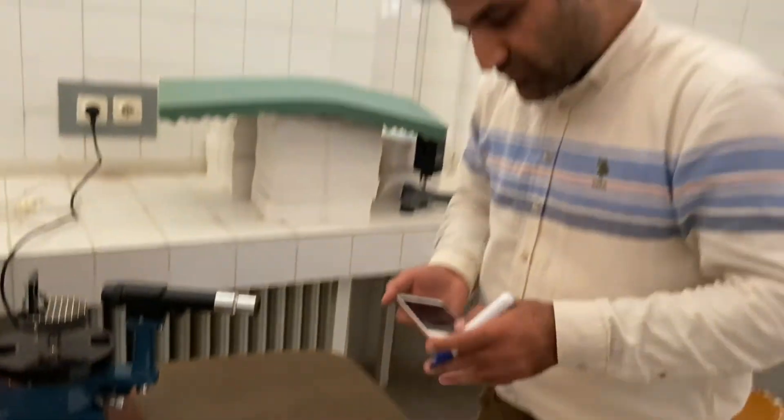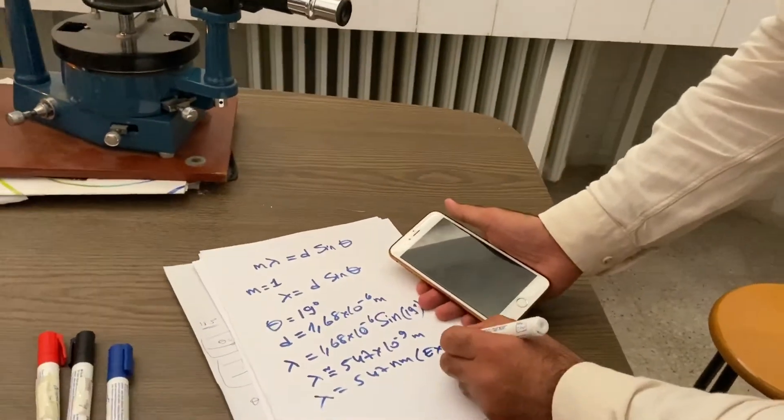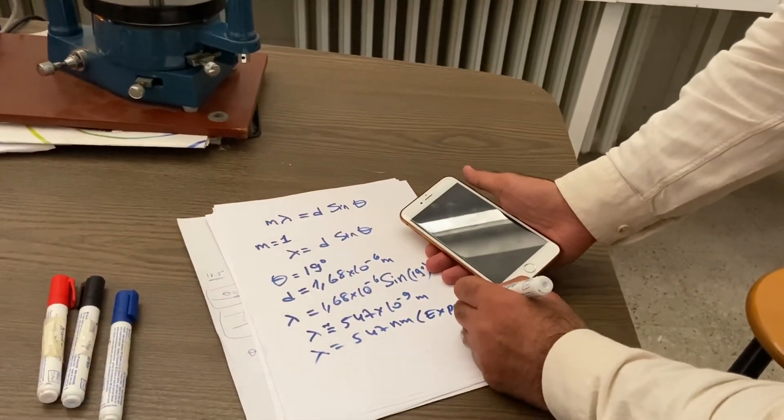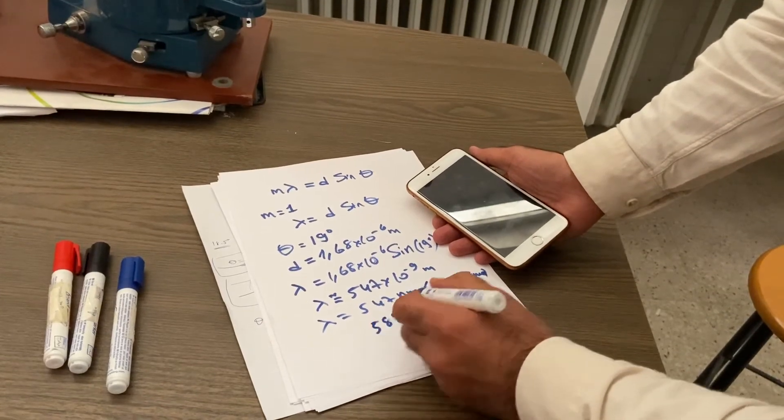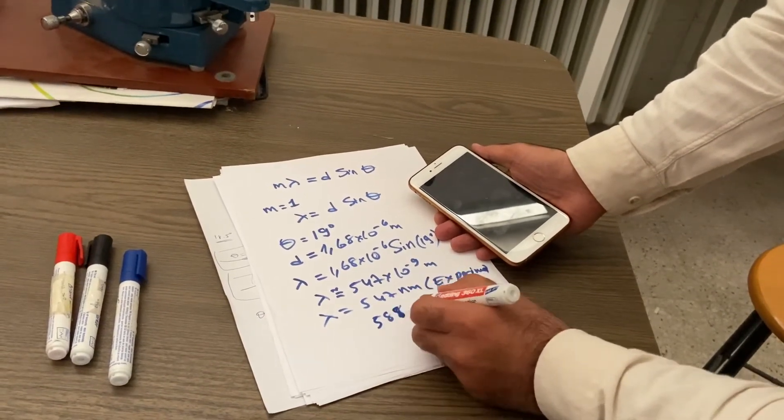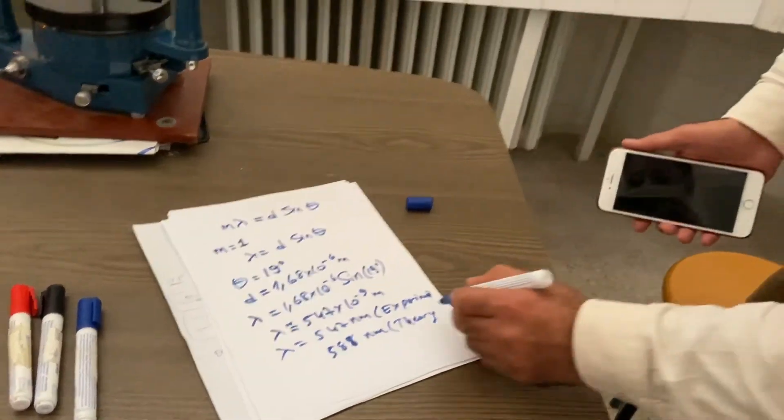As we know, the line of that sodium transition—this is the experiment. And the theory is five eight eight nanometers. This is theory.